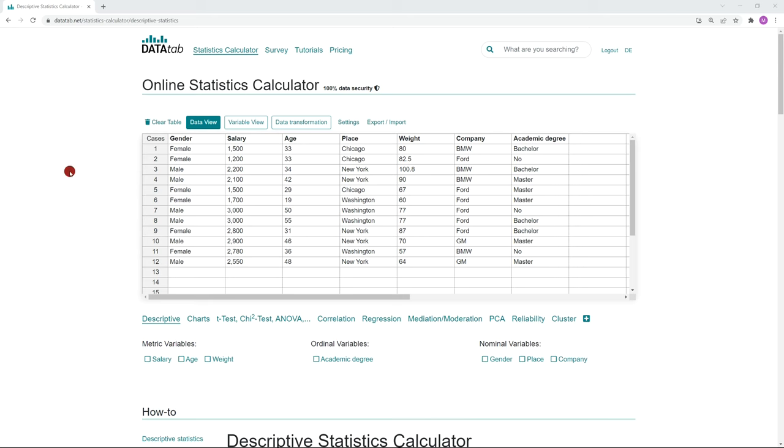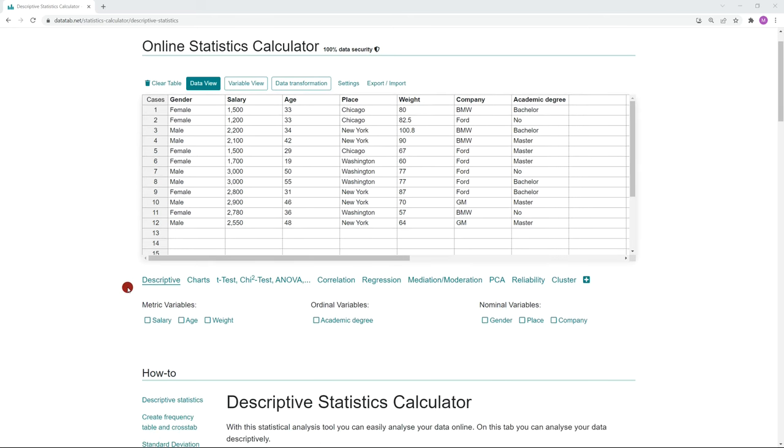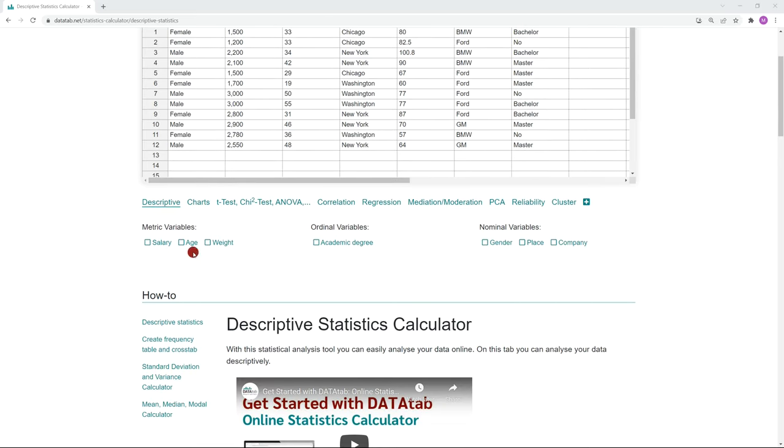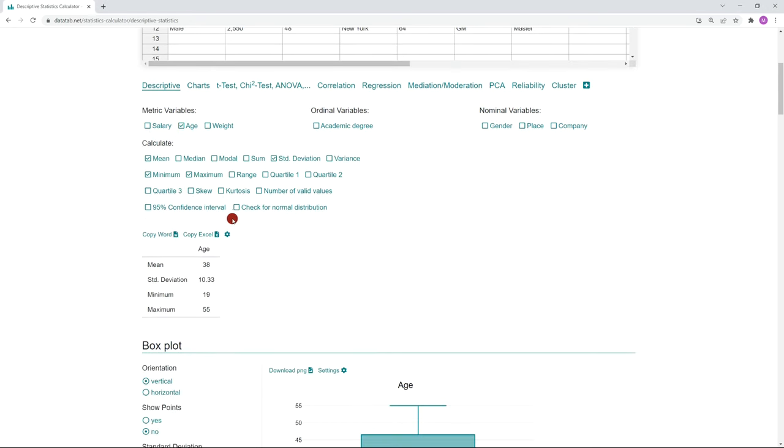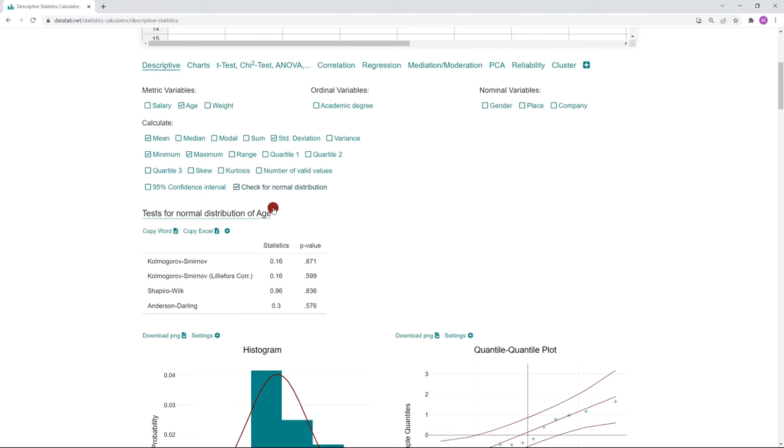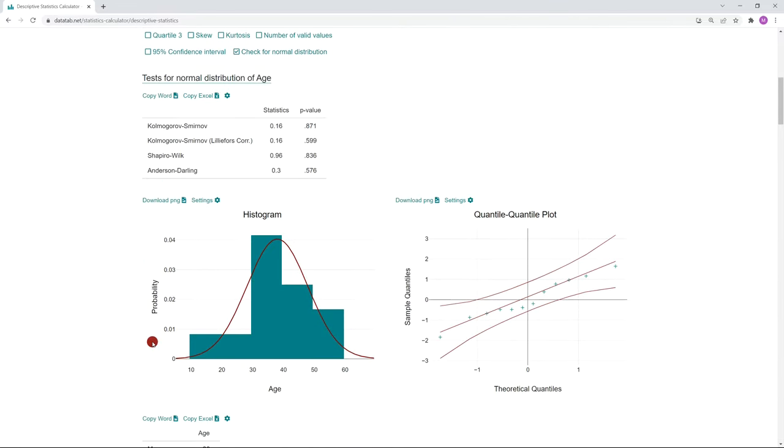Just copy your data into this table. Click on Descriptive statistics and then select the variable you want to test for normal distribution. For example, age. After that, you can simply click on Test for normal distribution here and you will get the results down here.